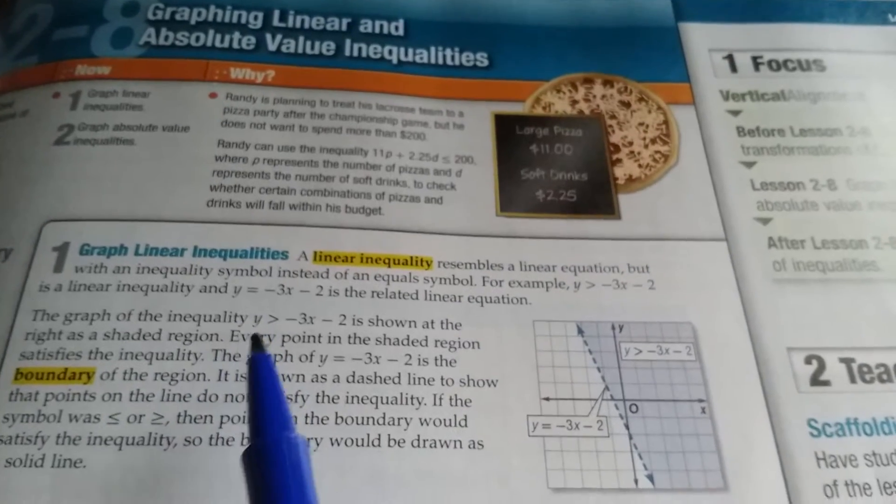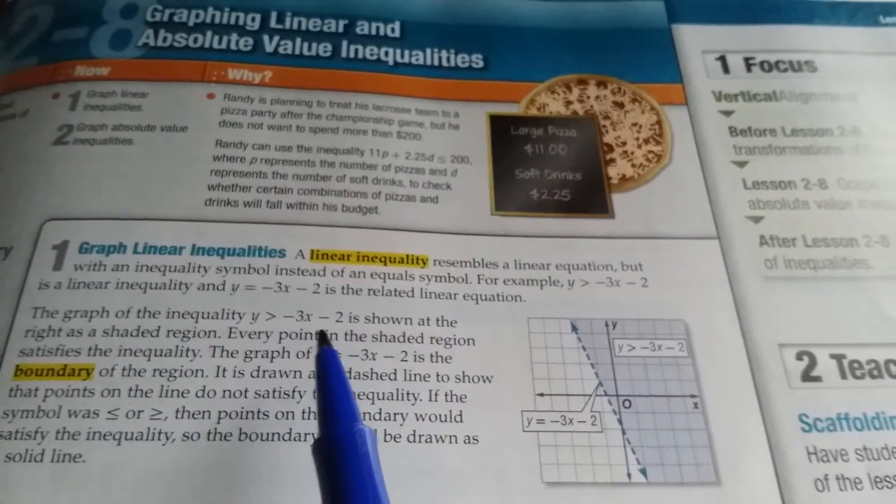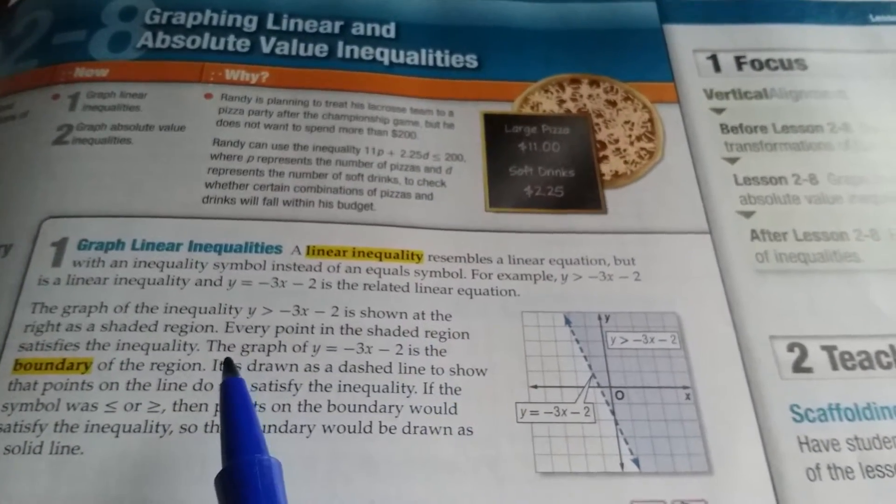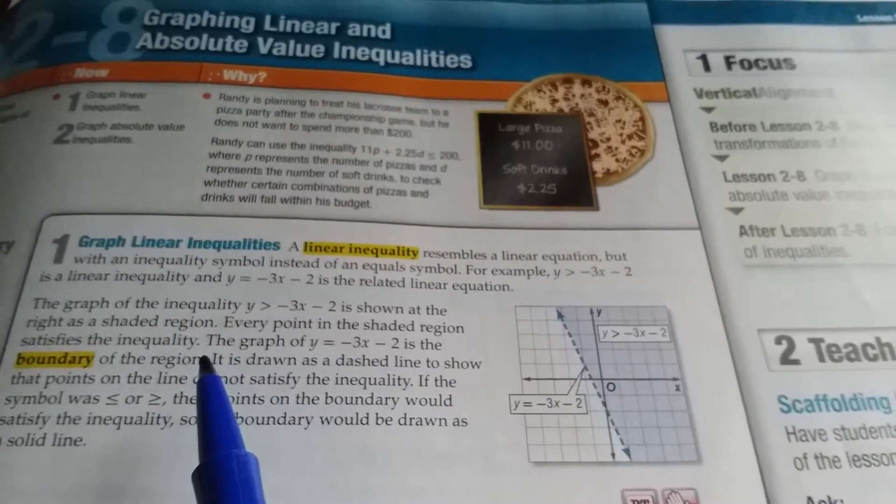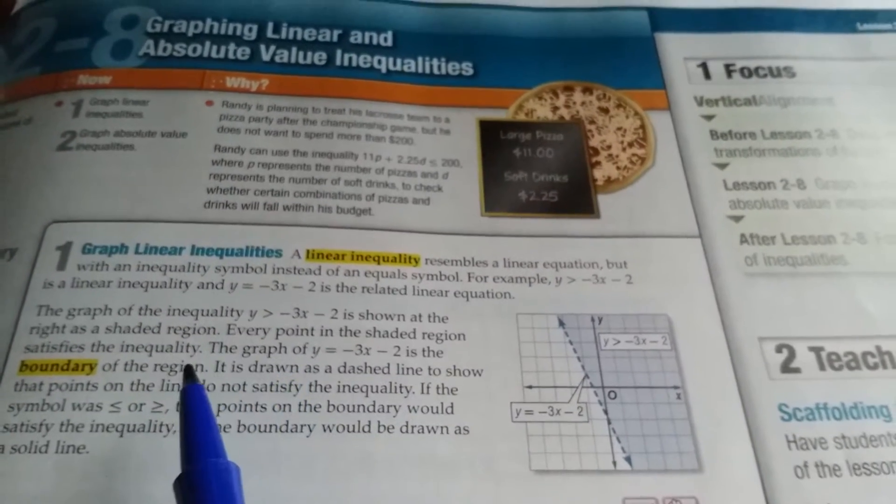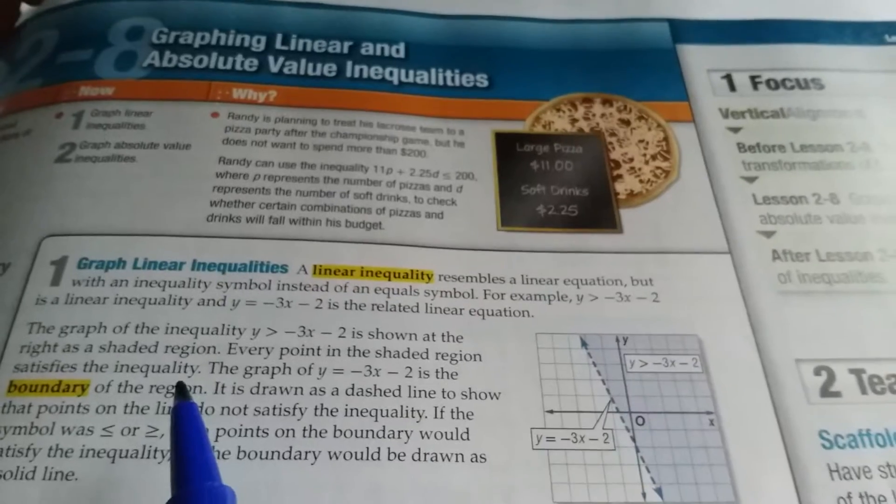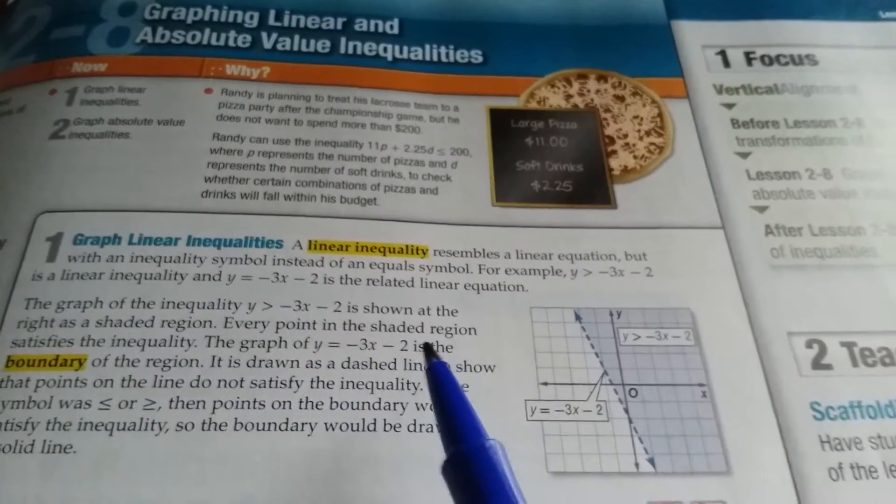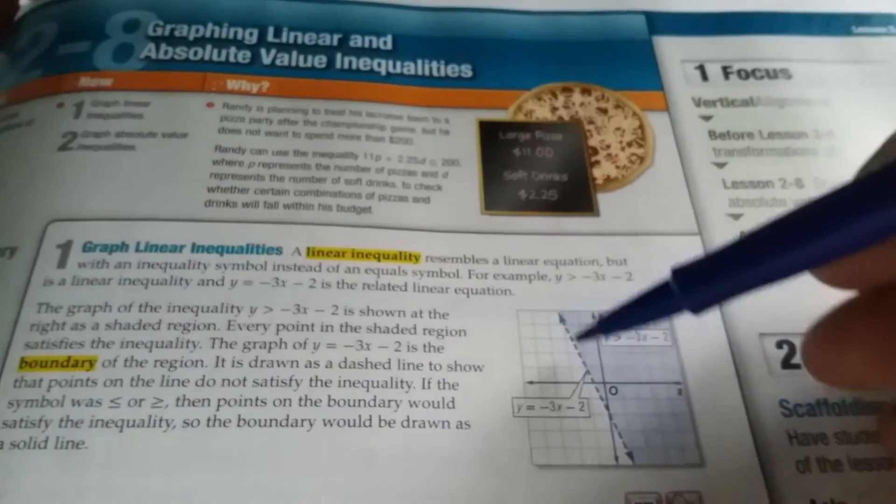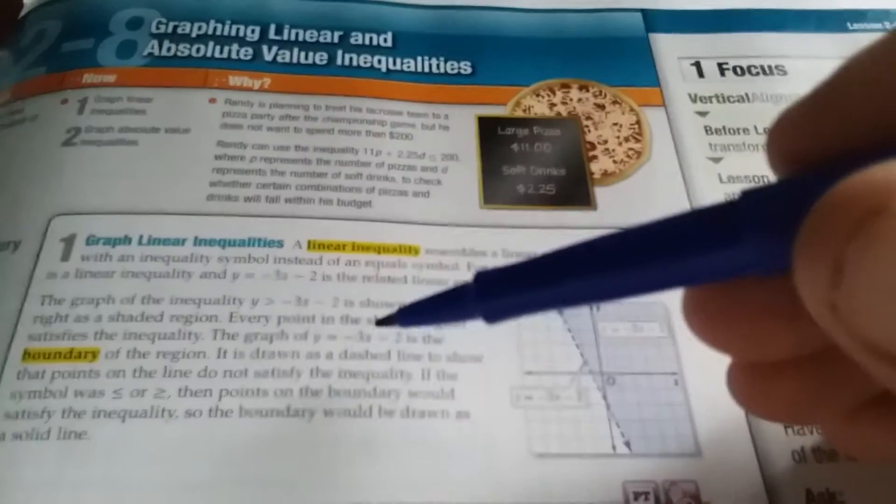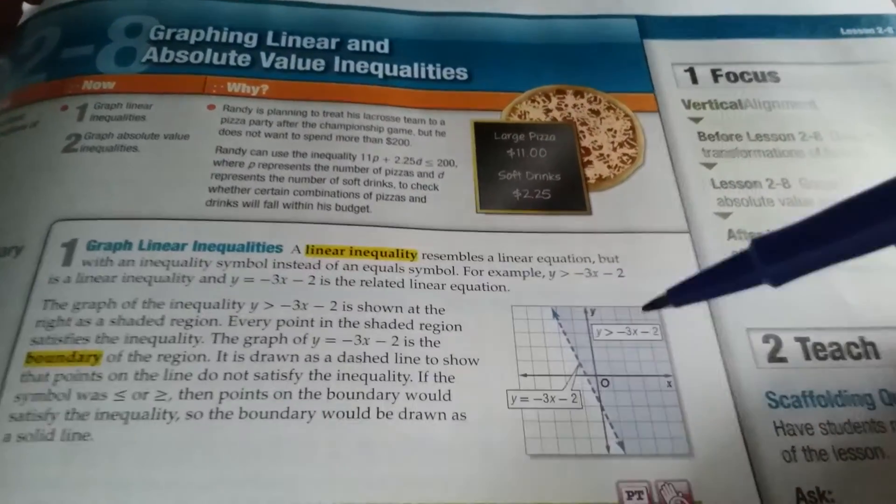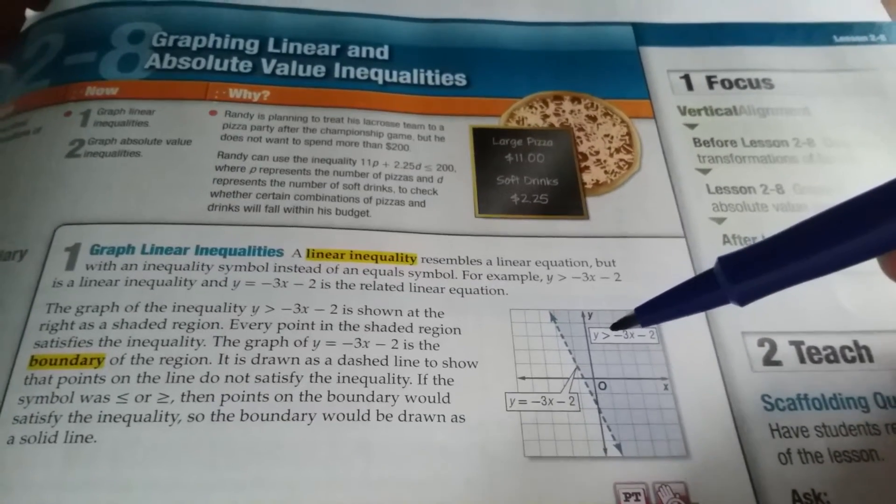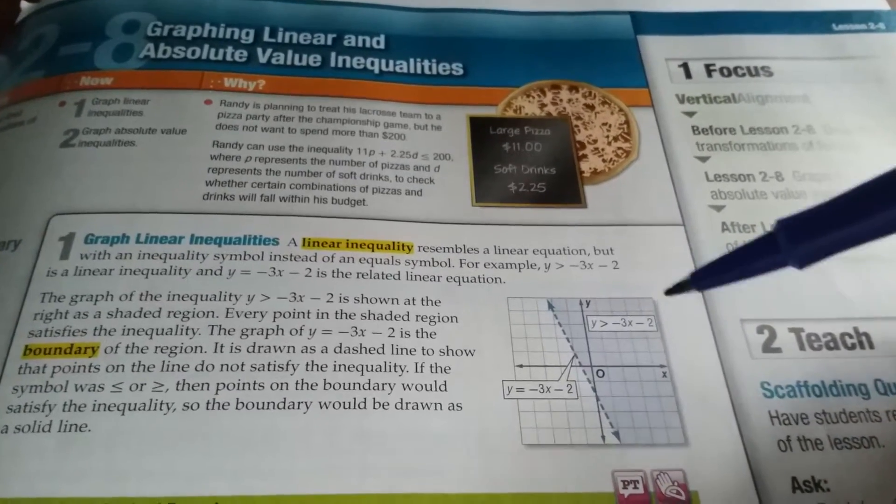The graph of the inequality y is greater than negative 3x minus 2 is shown at the right as the shaded region. Every point in the shaded region satisfies the inequality. The graph of y equals negative 3x minus 2 is the boundary of the region, so this dashed line is the linear equation. The shaded part is the solution to y is greater than negative 3x minus 2.